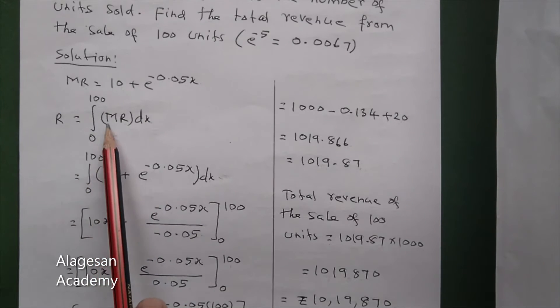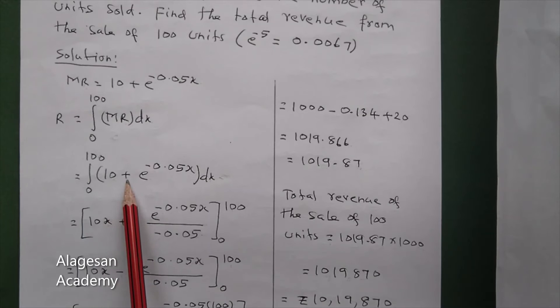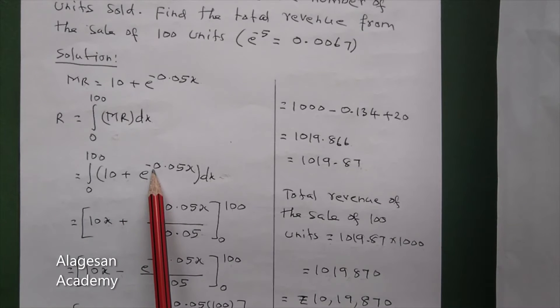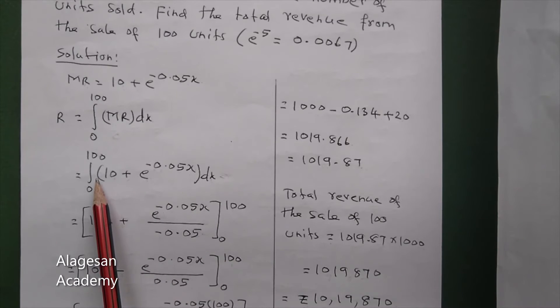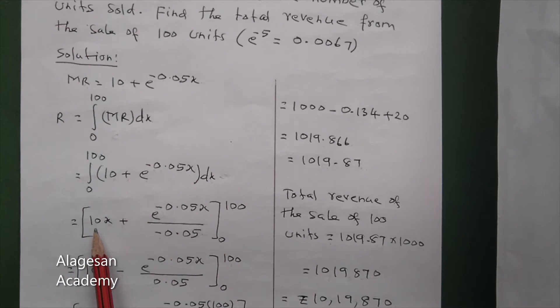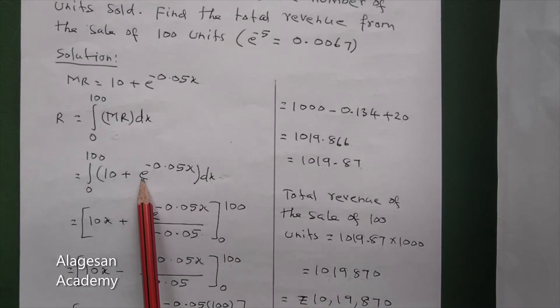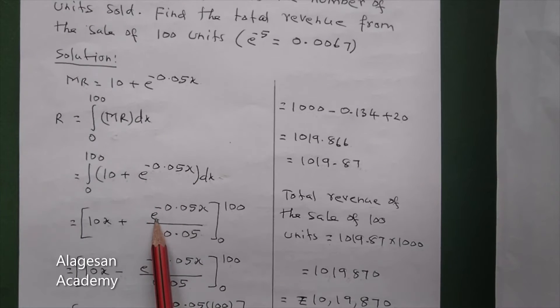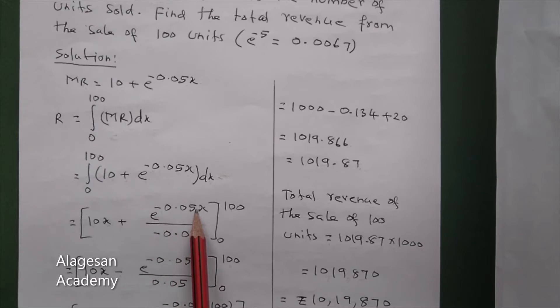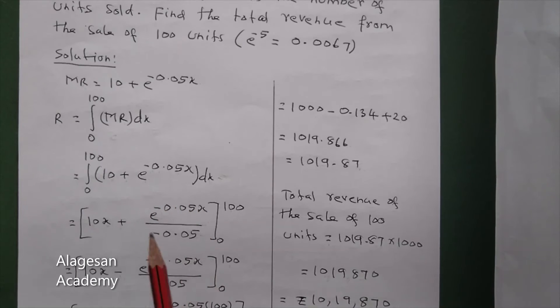Now we can integrate. Integrate 10, we get 10x. Integrate e power minus 0.05x, we get e power minus 0.05x divided by the coefficient of x, which is minus 0.05, limit 0 to 100.